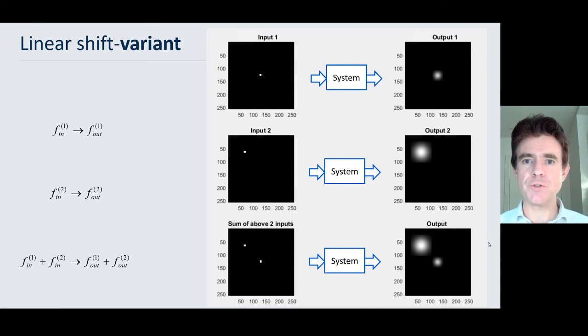Now, in contrast, to really drive home the point of a linear shift invariant system, let's take a look at a linear shift variant system. So here we've got the same case as before, a sort of point source in the middle of the field of view of my 2D imaging system, and so I get some kind of response in photographing that input function.